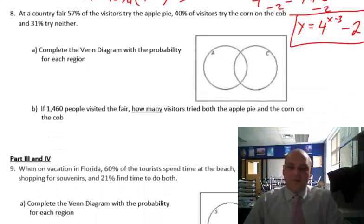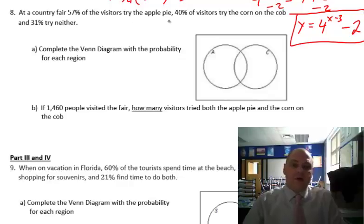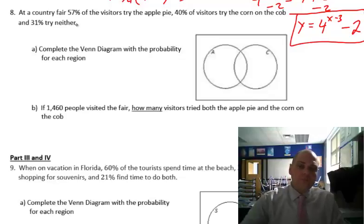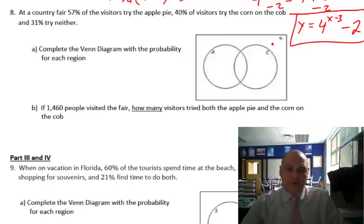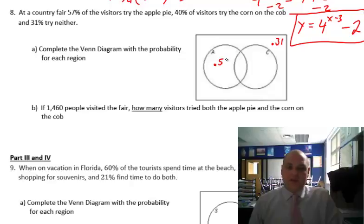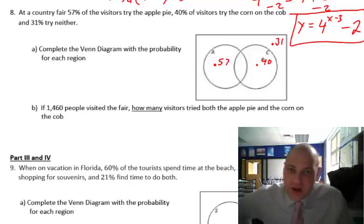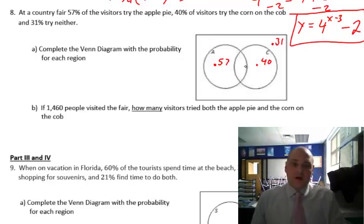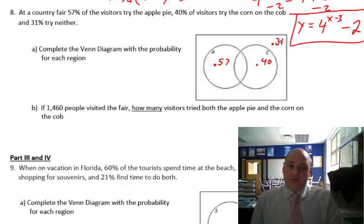At a country fair, 57% of the visitors try the apple pie, 40% try the corn on the cob, and 31% try neither. The neither goes outside at 0.31. What students sometimes mess up is putting 0.57 in one circle and 0.40 in the other directly — but that's a problem. 57 and 40 is 97, plus 31 goes over 1.0. Everything's got to add up to 1.0.